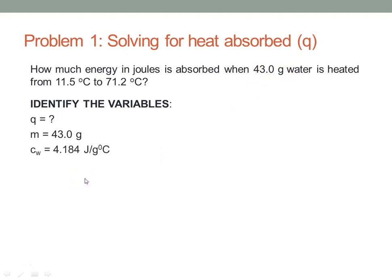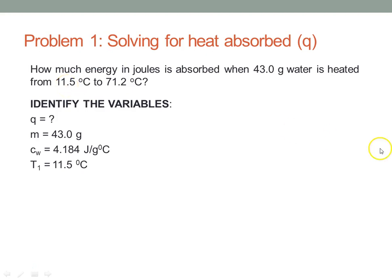C, in this case, since we're talking about water, the specific heat for water is the constant that you're always given, and that's 4.184 joules per gram degree C. The initial temperature T1 is 11.5, and the final temperature T2 is 71.2 degrees C.